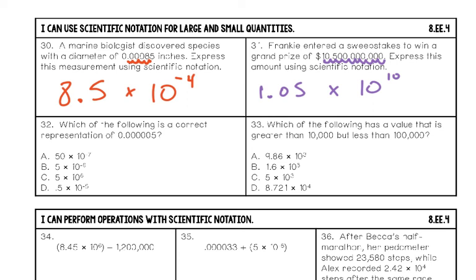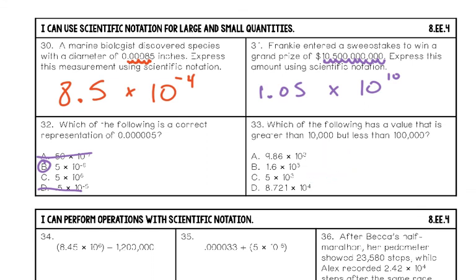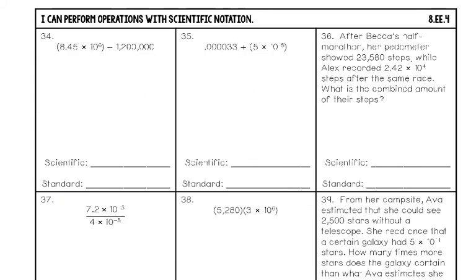Number thirty-two: which of the following is a correct representation? The first number in scientific notation must be between one and ten — so you can rule out A and B right away. Since it's a really small number, it must have a negative exponent, so the answer is D. Number thirty-three: which value is greater than ten thousand but less than a hundred thousand? Simplifying all options, D gives 87,210 — which is greater than 10,000 but less than 100,000. Final answer: D.